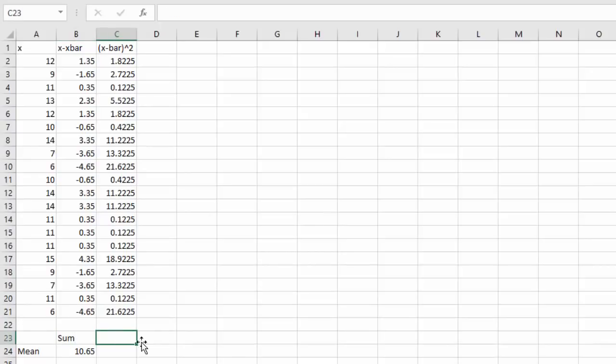The formula says it wants the sum of all of those. So we'll say equals the sum. Open a parenthesis. And select all those data values that we want to add. And we find the sum is 138.58.